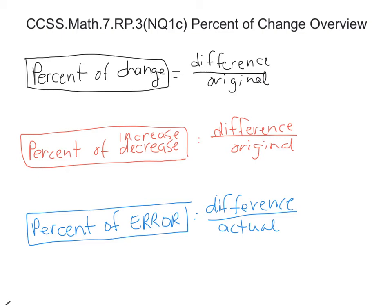Common Core State Standards, Math, 7th grade, ratios and proportions, 3, numbers and quantity, 1c.